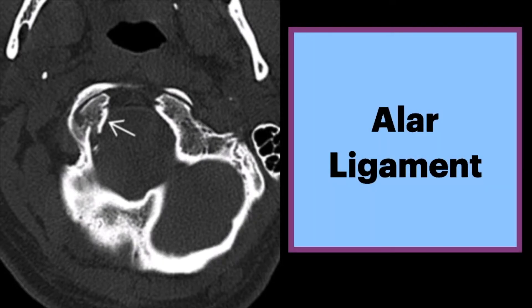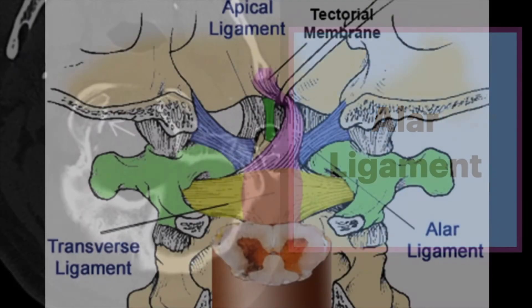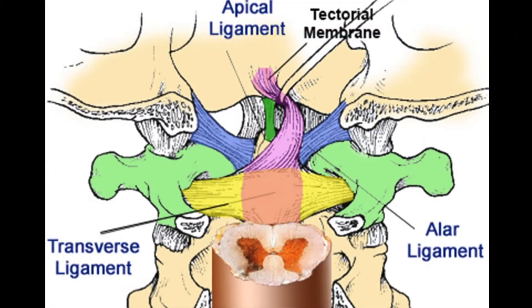This is the alar ligament. To review, the alar ligament joins the lateral margin of the dens of the C2 vertebral body to the medial aspect of the occipital condyles.